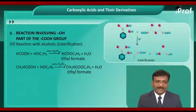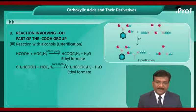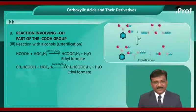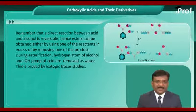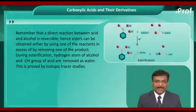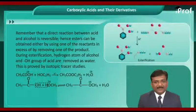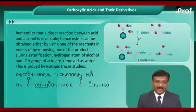The reaction is reversible due to the formation of excess water molecules. To obtain the required esters, the reaction is carried out in the presence of concentrated sulphuric acid, which has a tendency to absorb excess water molecules, making the reaction unidirectional. A direct reaction between acid and alcohol is always reversible; hence esters can be obtained by using one reactant in excess or by removing one of the products. During esterification, the hydrogen atom of the alcohol and the OH group of the acid are removed as water. This is proved by isotopic tracer studies.